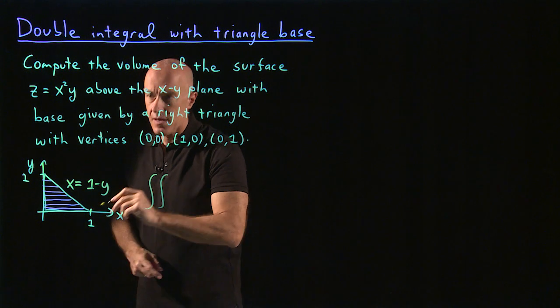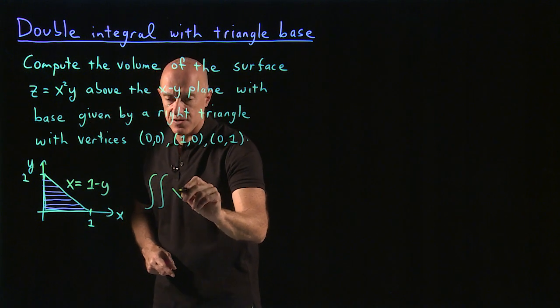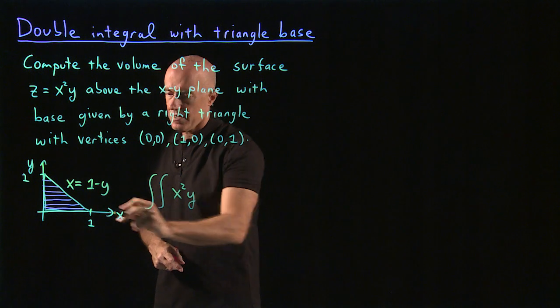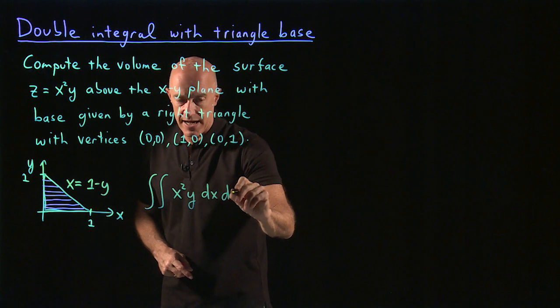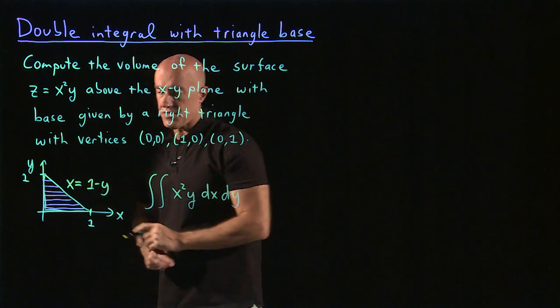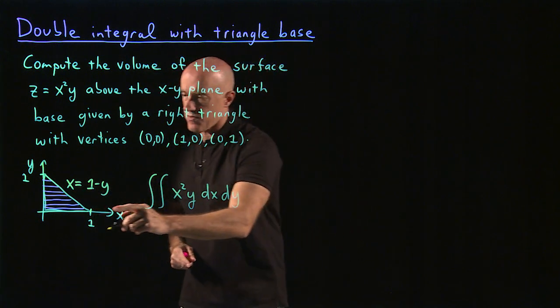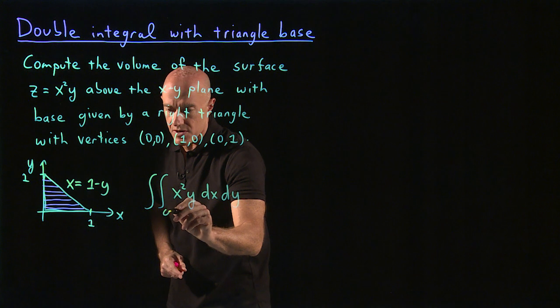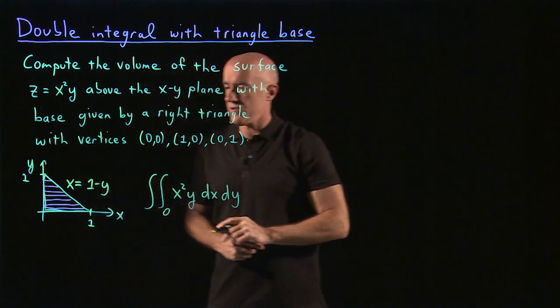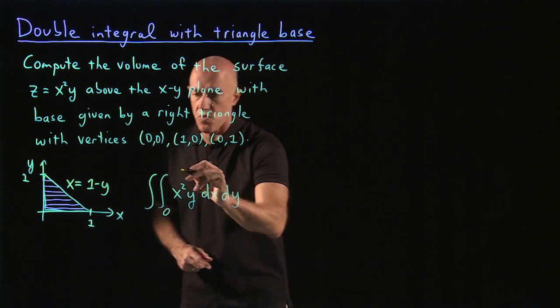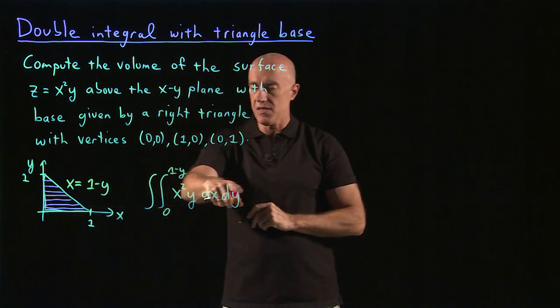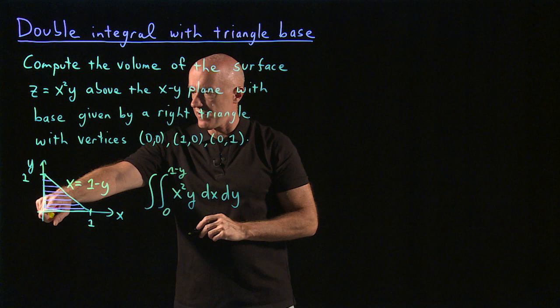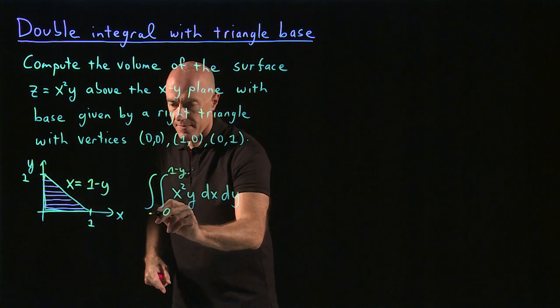So the double integral here, we'll be integrating over x squared y. We integrate x first and then y. And the limit of integration for x is that we start from x equals 0. And then we integrate to the hypotenuse, which is 1 minus y. And then finally, we do the y integral, which will be from 0 to 1.